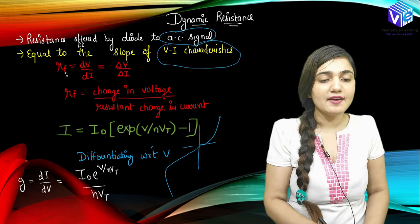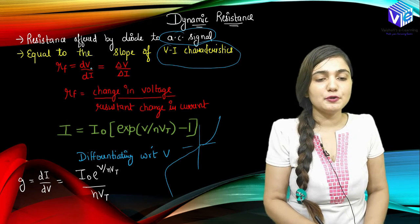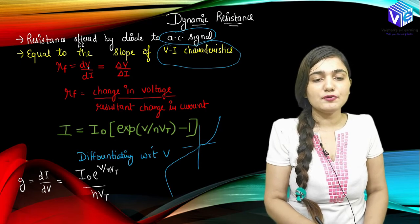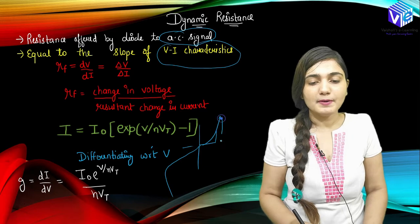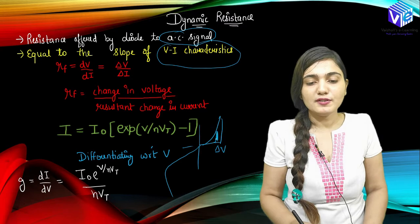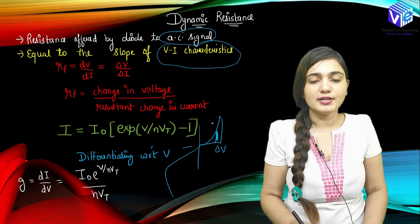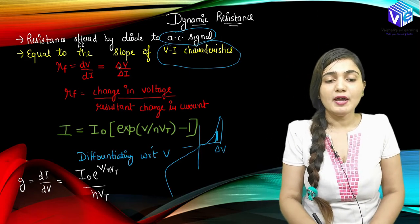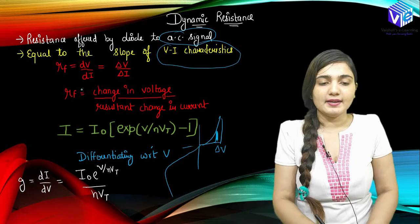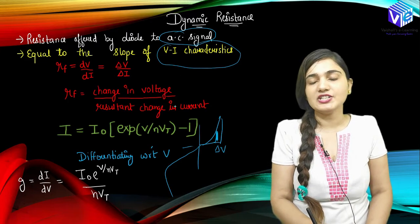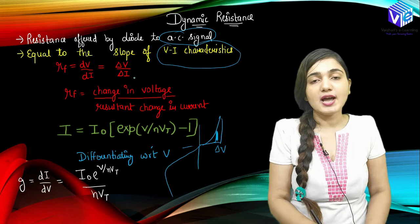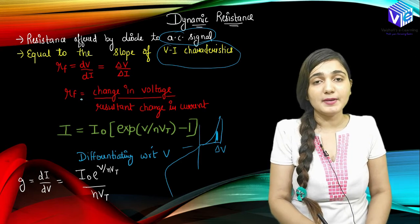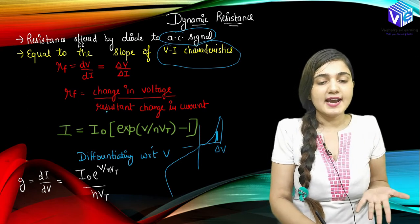Dynamic resistance is represented by small rf and we calculate it as the slope: dV/dI or ΔV/ΔI. For a small difference I use dV, and if I am taking a larger gap I use ΔV. So rf equals change in voltage divided by resultant change in current. This is how it is different from static resistance — in terms of change I find the dynamic resistance.